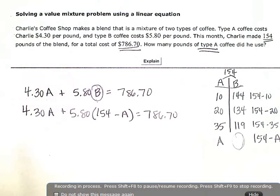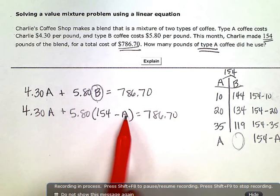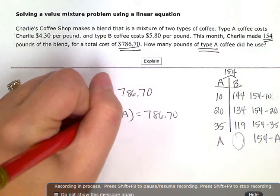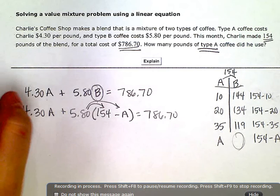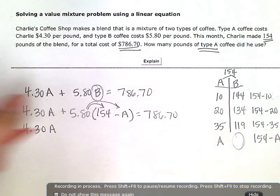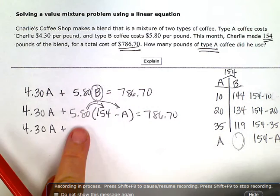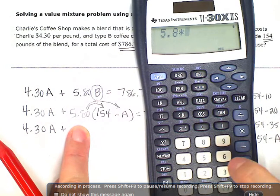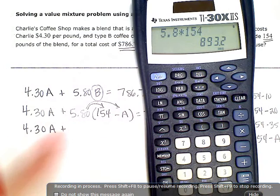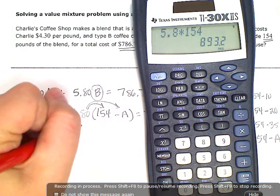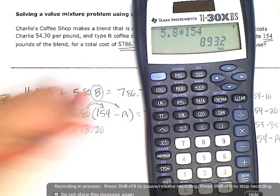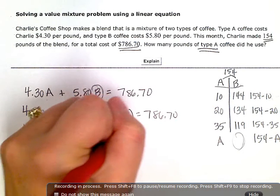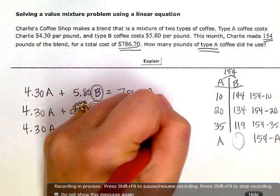Now, I can go ahead and solve my equation because I have just one variable here. So now I'm just going to go through my regular steps to solve. So I'm going to distribute here to get rid of the parentheses. So $4.30 times A plus, now I need to do 5.8 times 154.